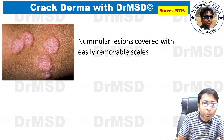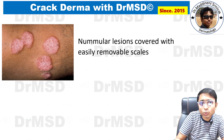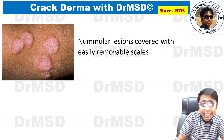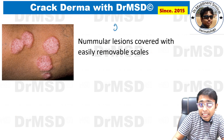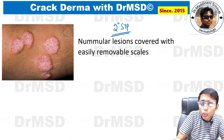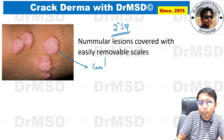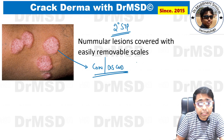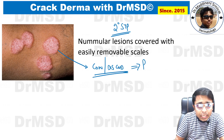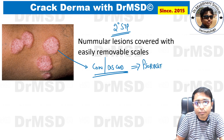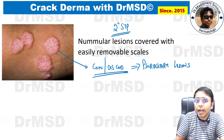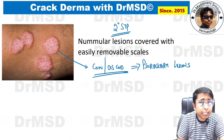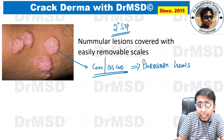Looking at the other options with images: nummular lesions covered with easily removable scales are seen in secondary syphilis. These are coin-shaped or discoid lesions referred to as psoriasiform lesions, and they are associated with serous discharge, which is why the scales are easily removable.